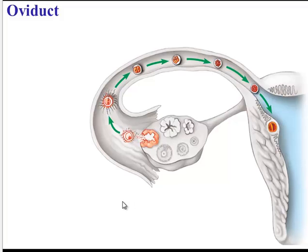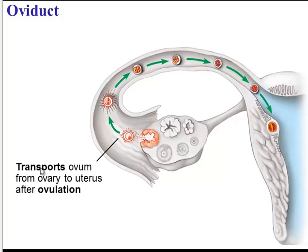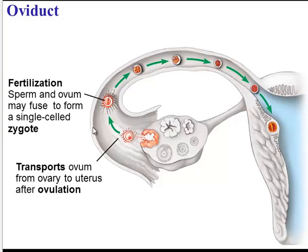Once that egg is released, it is swept into the oviduct. The oviduct does a couple of important things. The first is transport — its job is to transport the ovum, or egg, from the ovary into the uterus. However, something important may happen along the way: in the oviduct, the sperm and the egg may fuse during the process of fertilization. If that occurs, the ovum is now a zygote.